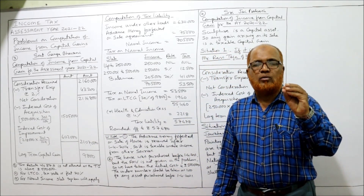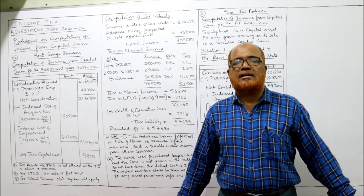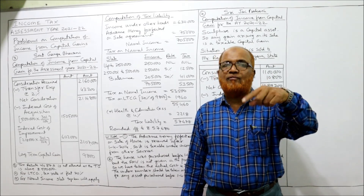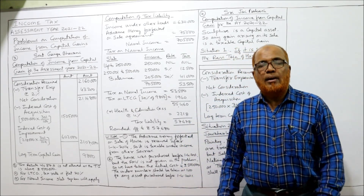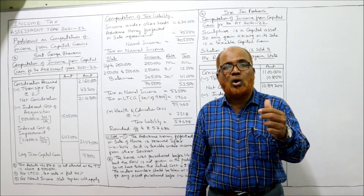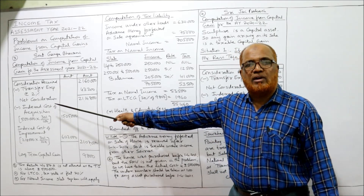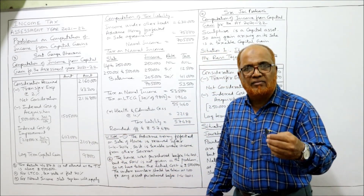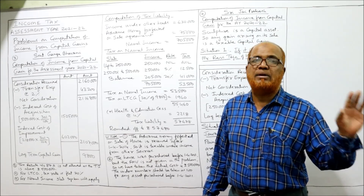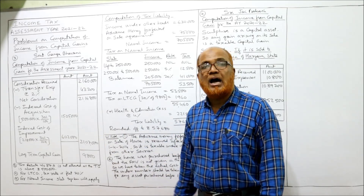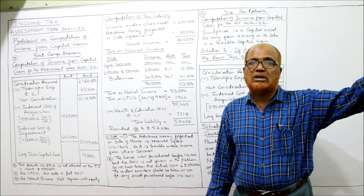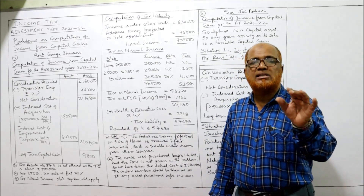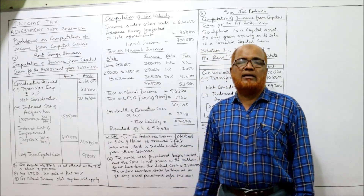From the net consideration, we deduct indexed cost of acquisition and indexed cost of improvement. The actual cost of the house is rupees 5 lakh. Since the asset was purchased before 1/4/2001, the index number is 100. Indexed cost of acquisition = 5,00,000 × 301 ÷ 100 = rupees 15,05,000. The current previous year index of 301 must be remembered whether or not given in the problem.